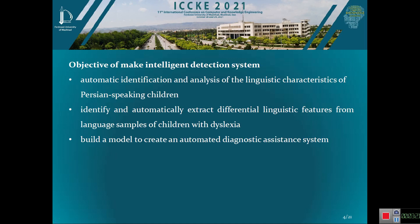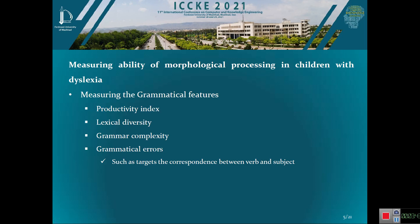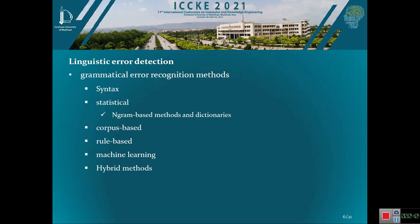Now it's time to describe the objective of the intelligent detection system. The aim of this study is to identify and automatically extract differential linguistic features from language samples of children with dyslexia, and to build a model to create an automated diagnostic assistance system for diagnosing this disorder in patient-speaking children. The process involves measuring morphological processing ability and grammatical features such as productivity index, lexical diversity, grammatical errors including verb-subject correspondence, and grammatical complexity. Grammatical error detection is called linguistic error detection, and methods include syntax-based, statistical-based, n-gram-based, corpus-based, rule-based, machine learning-based, and hybrid methods.